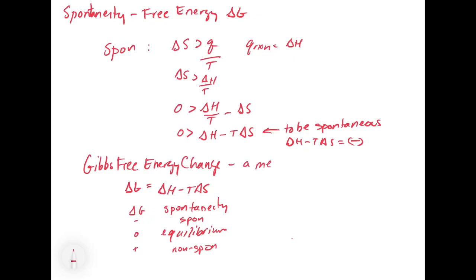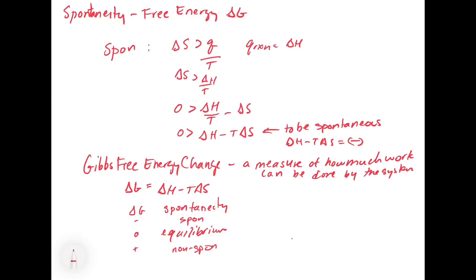Another way to think of the Gibbs free energy change is that it's a measure of how much work can be done by the system. A system that has a negative delta G can do work. A system that has a positive delta G needs to have work done on it. And one that's at zero can't do any work — it's at equilibrium.